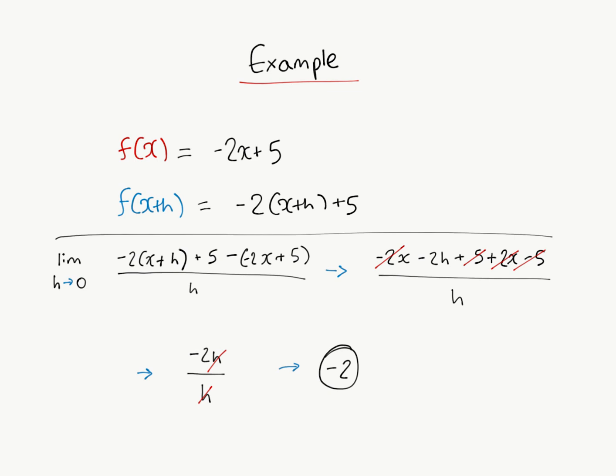Then we have to find the limit of this equation when h approaches 0: negative 2 times x plus h plus 5 minus 2x plus 5, all divided by h.